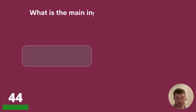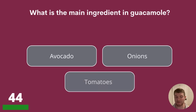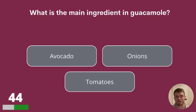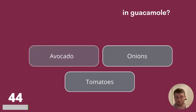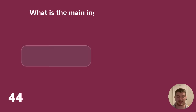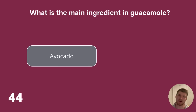Question 44. What is the main ingredient in guacamole? Is it avocado, onions or tomatoes? The answer is avocado.